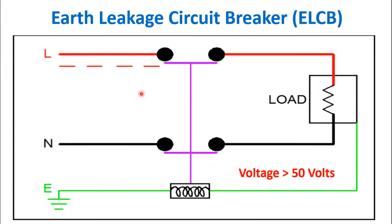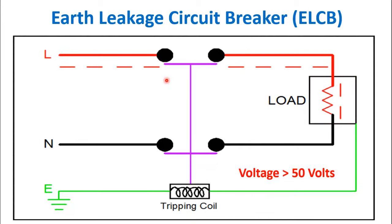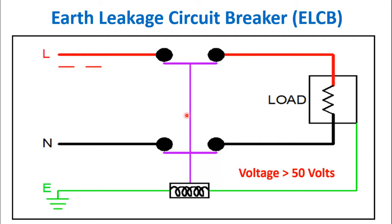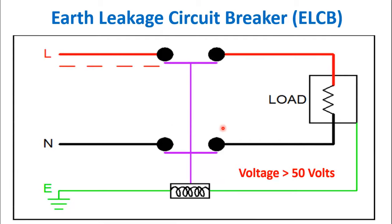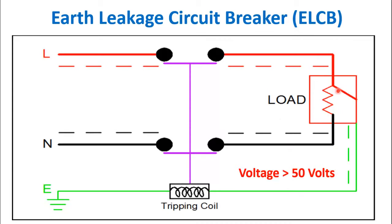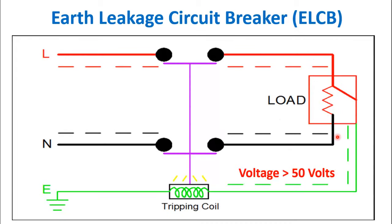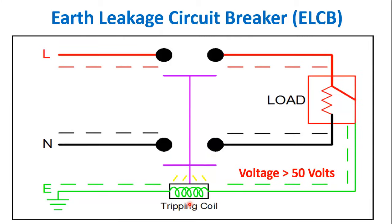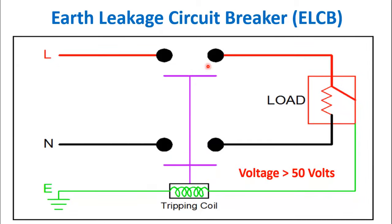So you can see through this animation that during normal operation there is no leakage current, but during a fault the leakage current starts to flow, it operates the tripping coil, and then stops the flow of current and breaks the circuit.